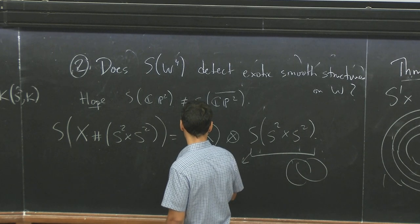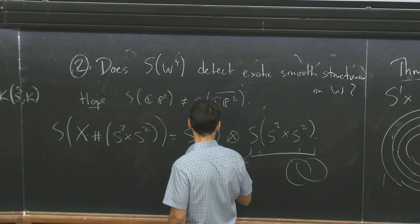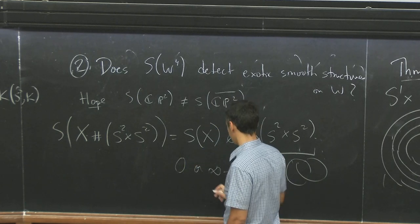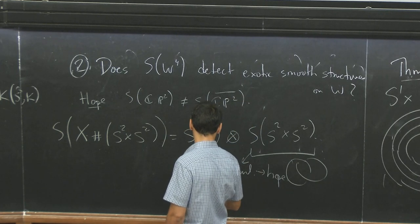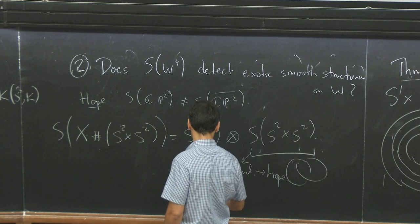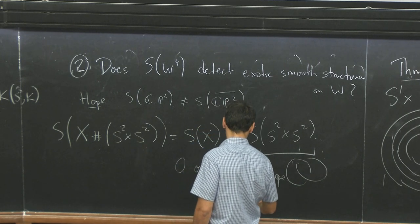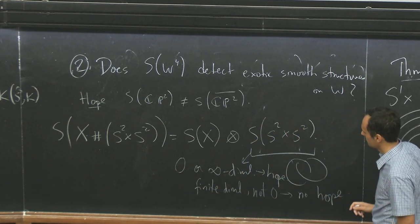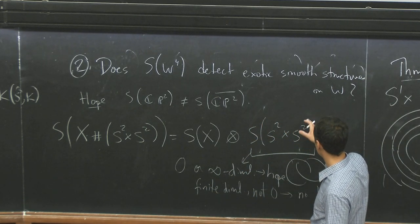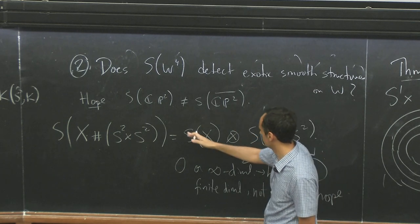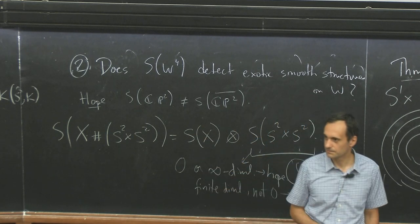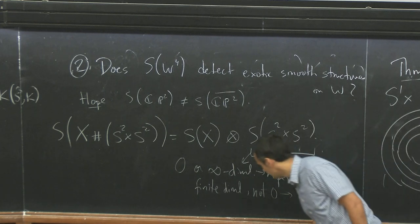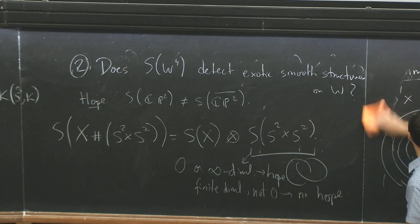So if someone could compute the Khovanov homology of cables of the Hopf link, then, yes, then I would know if I should think about this or not. Because if this is, you know, if this is zero or infinite dimensional, then there's some hope. If it's not, if it's finite dimensional, but non-zero, then there's no hope. Because, right, I mean, if it's zero or infinite dimensional, then once you know this invariant, you cannot tell the invariant for X.